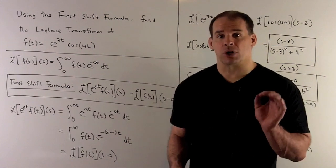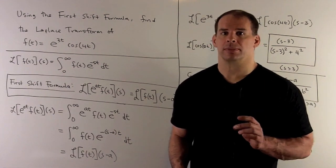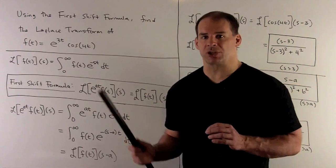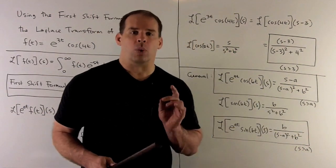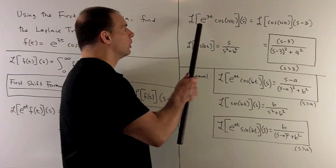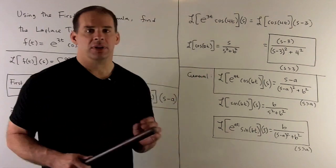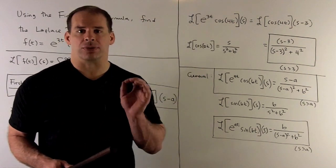So that's our first shift formula, just bookkeeping. Now let's apply it to our special case. First thing we note is we have e^(3t), so here our a is going to equal 3.